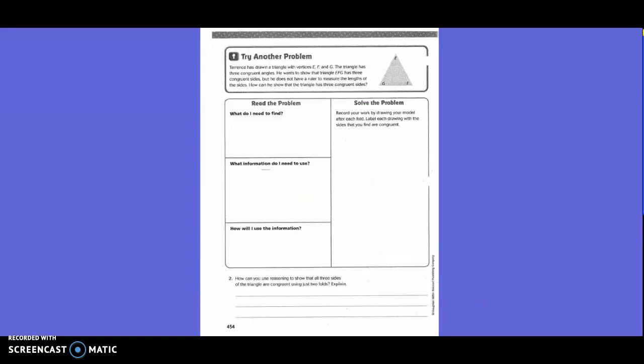Try another problem. Terrence has drawn a triangle with vertices E, F, and G. The triangle has three congruent angles. He wants to show that triangle EFG has three congruent sides, but he does not have a ruler to measure the lengths of the sides. How can he show that the triangle has three congruent sides?